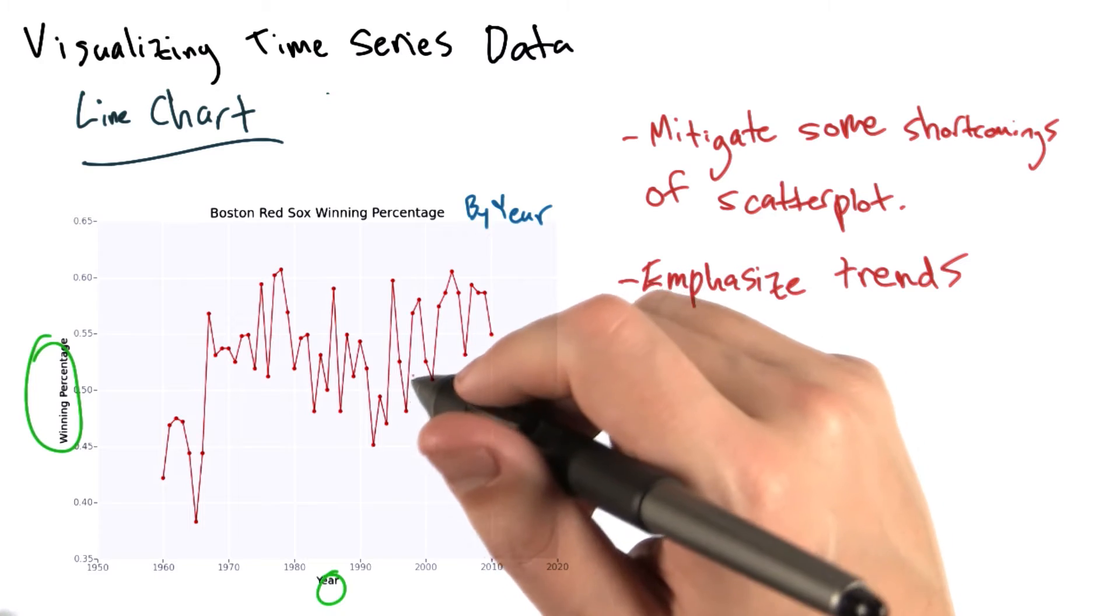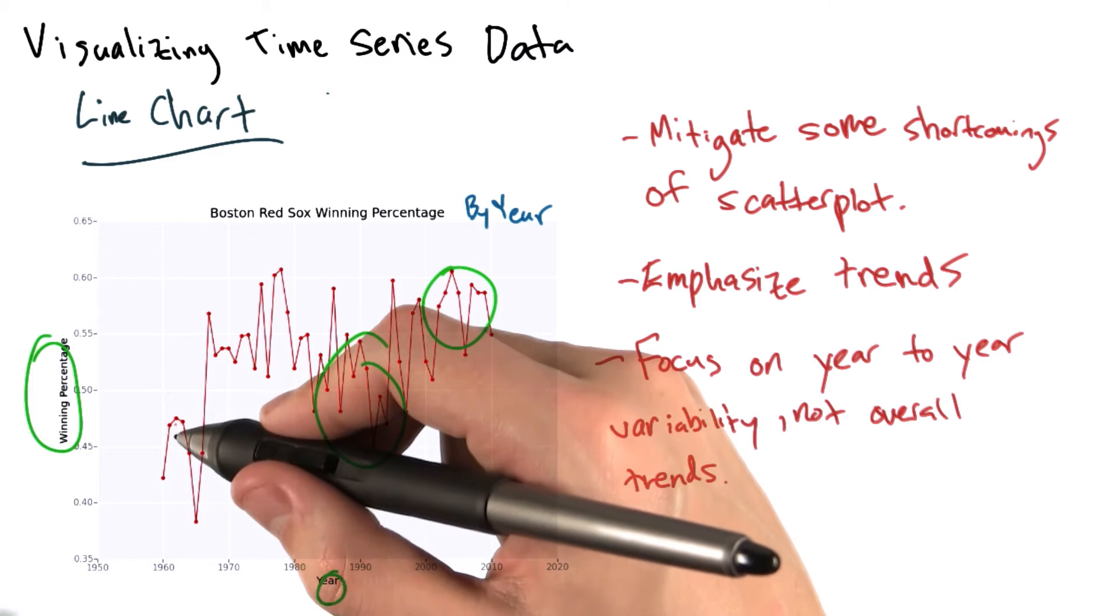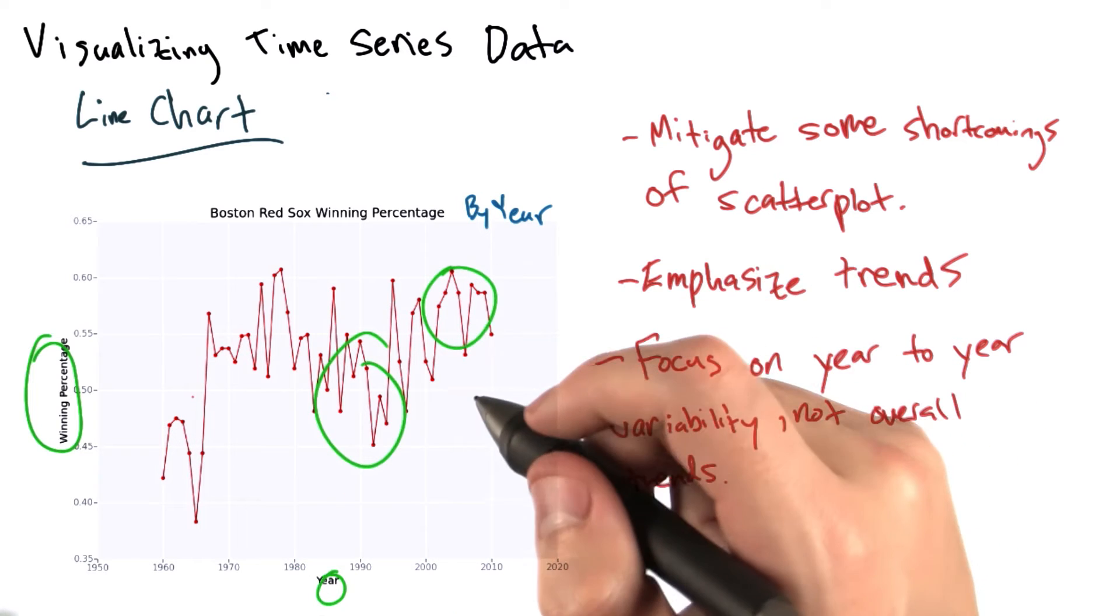It's a little bit harder to see this when we just have the points without the lines. That being said, having lines that connect each point really puts a focus on year to year variability.